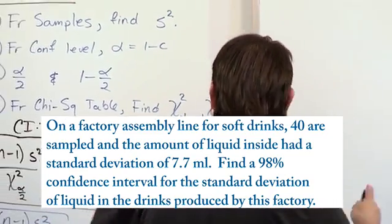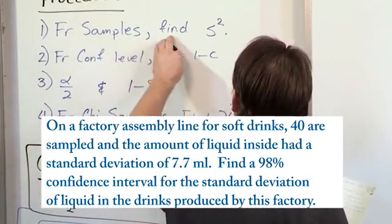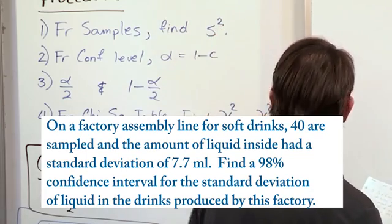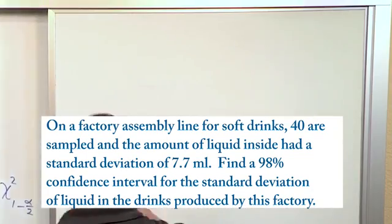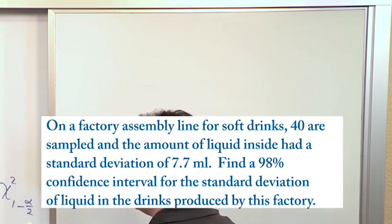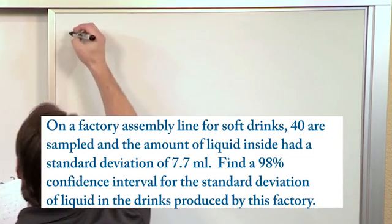And so we're going to follow this exact procedure. The first step is, it says, find S squared, which is the variance of the samples. So in this case, it tells us that the standard deviation is 7.7 milliliters.